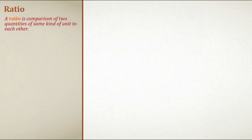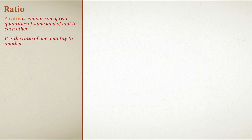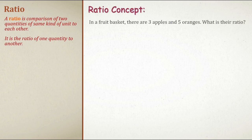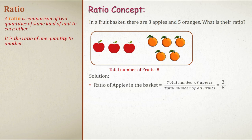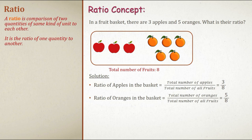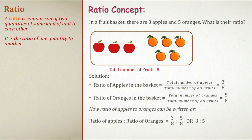Coming to ratio: a ratio is comparison of two quantities of the same kind of unit to each other. You cannot have a ratio of liters to kilograms — the unit should remain the same. Example: in a fruit basket there are 3 apples and 5 oranges. Ratio of apples is 3 divided by total fruits 8, which is 3 by 8. Ratio of oranges is 5 by 8. Ratio of apples to oranges is 3 by 8 to 5 by 8 — the 8s cancel and we get 3 is to 5.